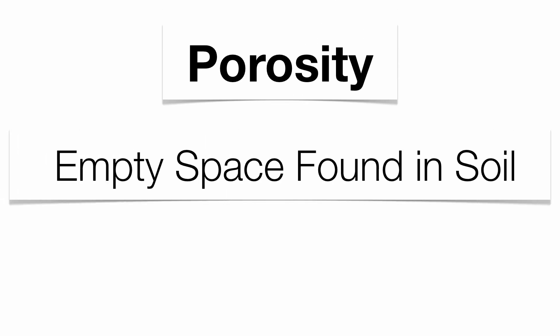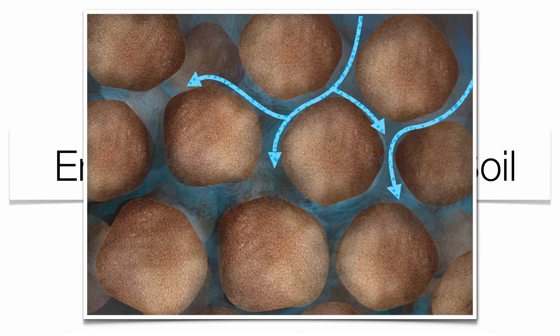Let's focus on porosity first. This is essentially the empty space found in between the soil sample. When you look at soil particles, based upon their size, shape, packing, and sorting, the little spaces interconnect themselves to make almost like a roadway for the water to work its way down into the zone of saturation. We're going to talk about the factors that influence how easy or difficult it is for water to get into the zone of saturation through these soil samples.